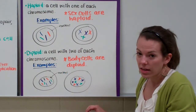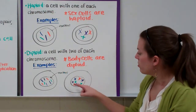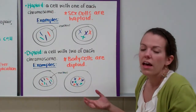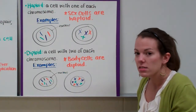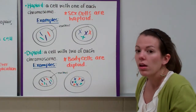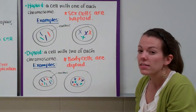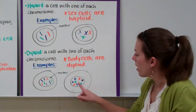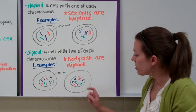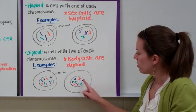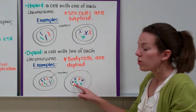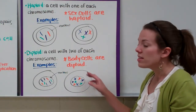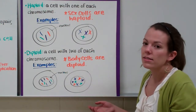Let's look at the second cell. Inside the nucleus, we have chromosomes that have been replicated, so they look like X's. But remember, when chromosomes look like X's, they still only count as one chromosome. So we have two blue chromosomes, two purple chromosomes, two orange chromosomes, and two green chromosomes. So this is also a diploid cell.